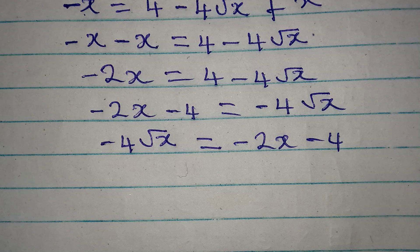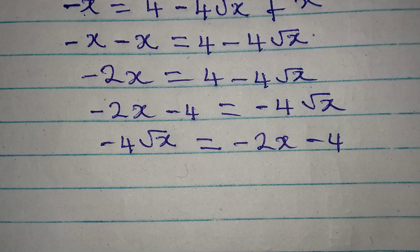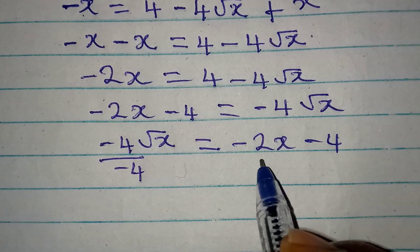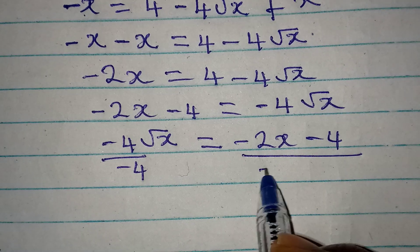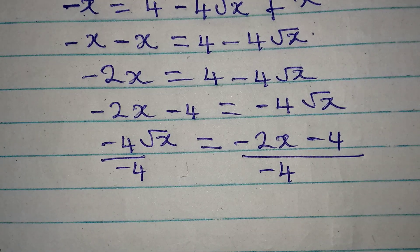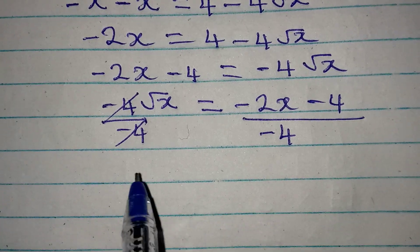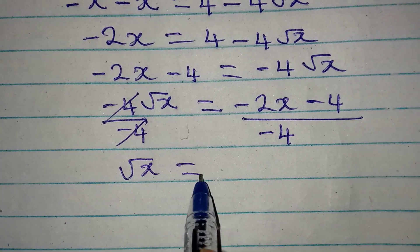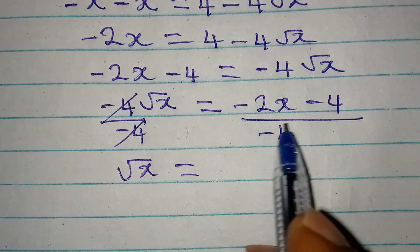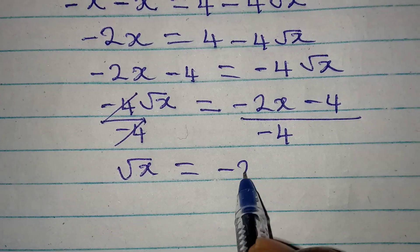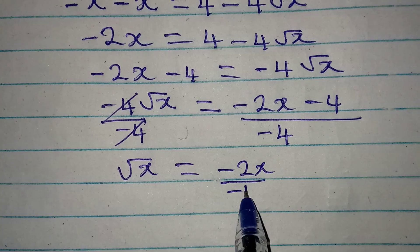From here, we divide both sides by negative 4. Dividing through, root x equals negative 2x over negative 4, which I can split up as minus 2x over minus 4.